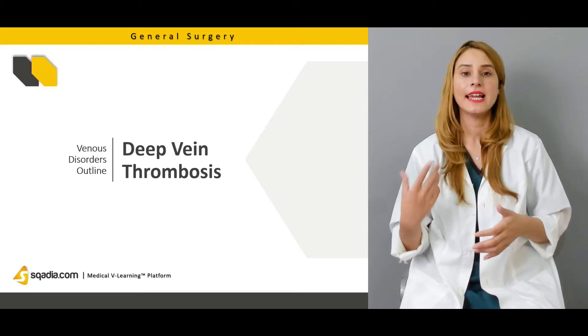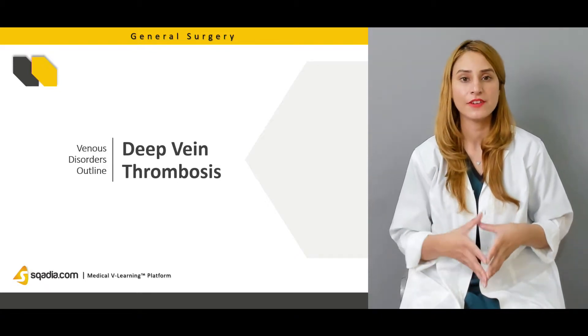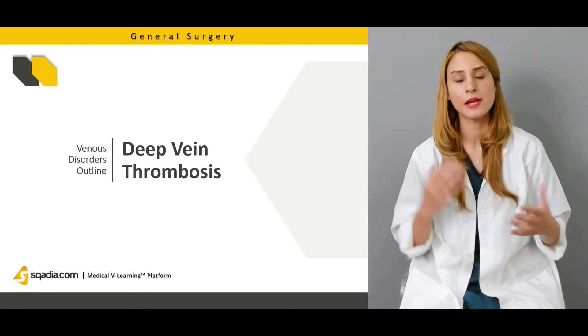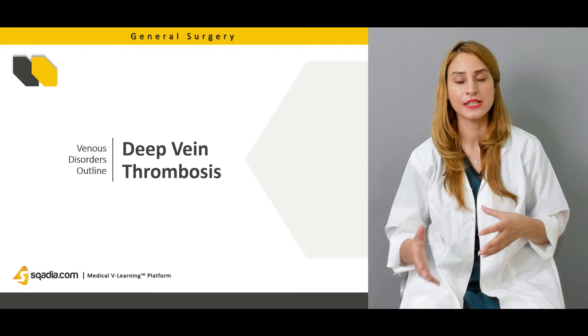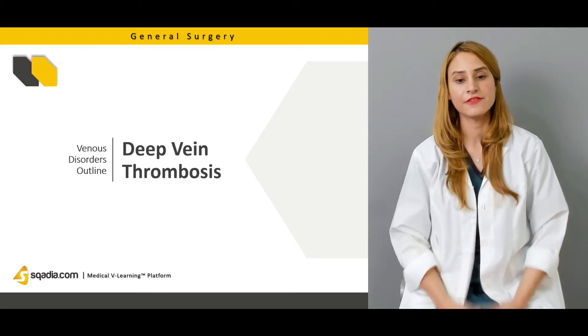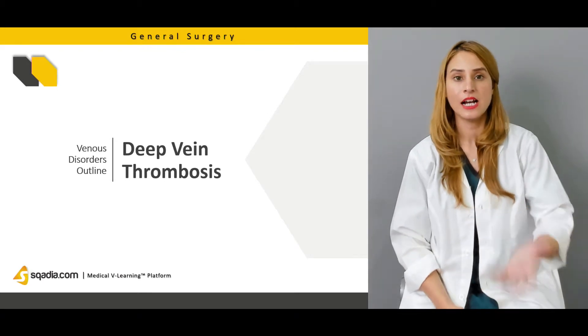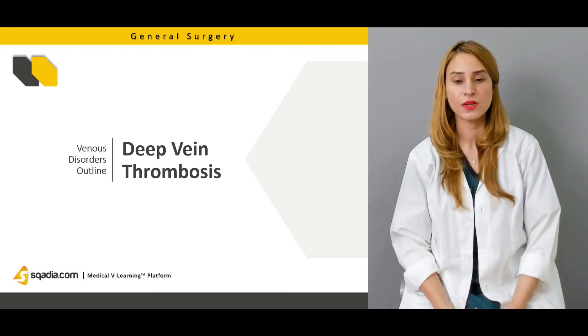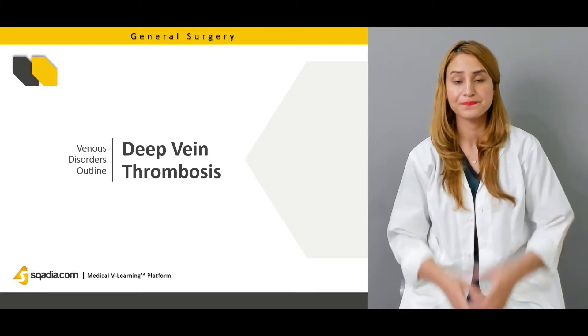The other components of Virchow's triad include hypercoagulability in cases of pregnancy, hypertension, Factor V Leiden, Protein C and Protein S deficiency. Stasis is also one of the causes for deep vein thrombosis.